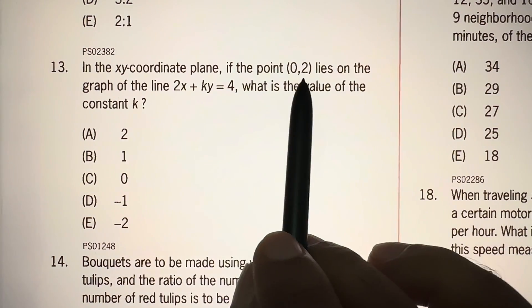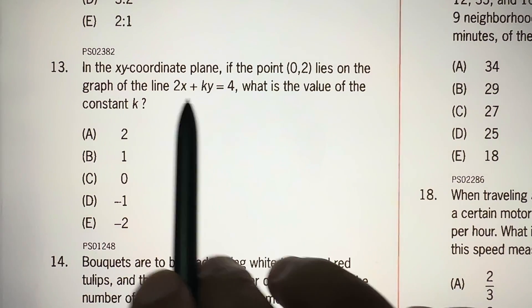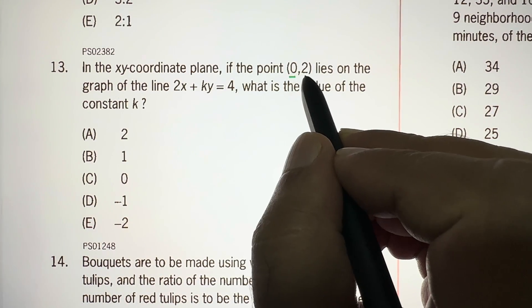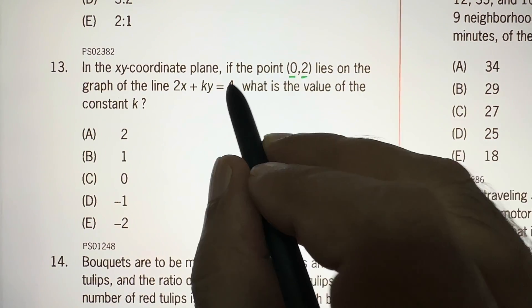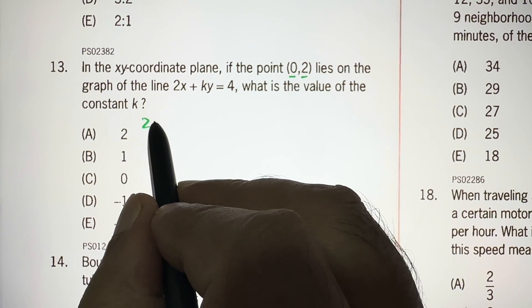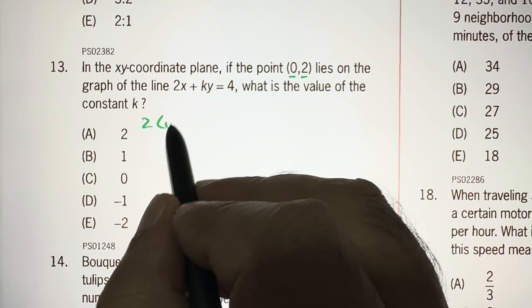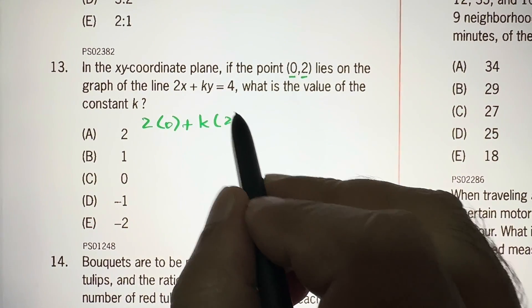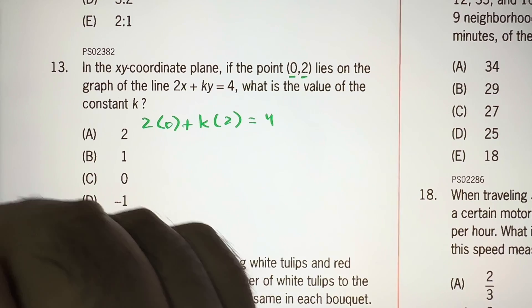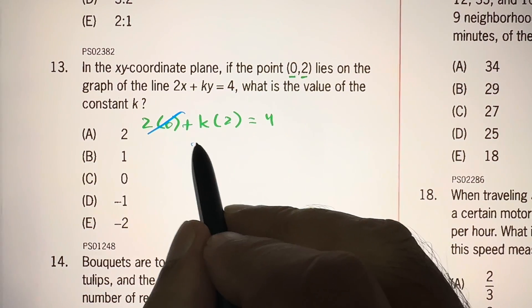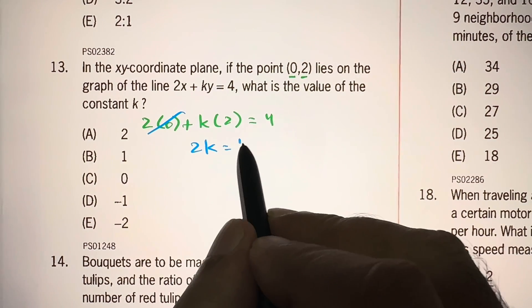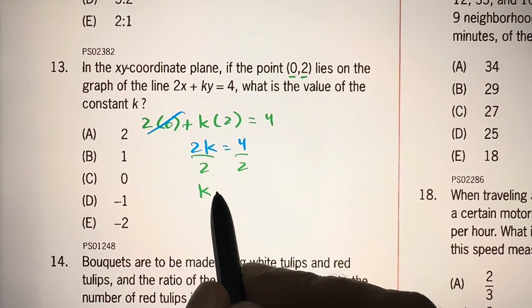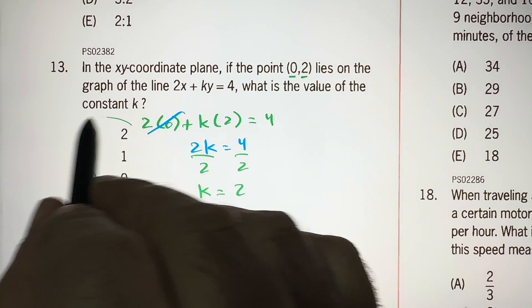Now, we know this point lies on the graph of this equation. So it means this is the value of x and this is the value of y. We can put these values in the equation here: 2 times x, that is 0, plus k times y, that is 2, is equal to 4. So this becomes 0 and 2k is equal to 4, and we divide both sides by 2 to get k is equal to 2. That's our answer, choice A.